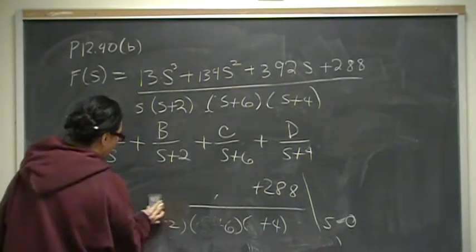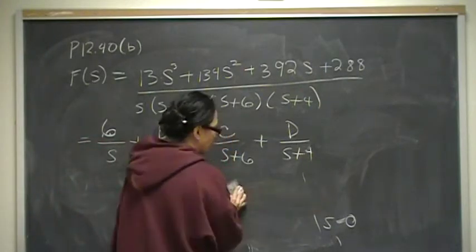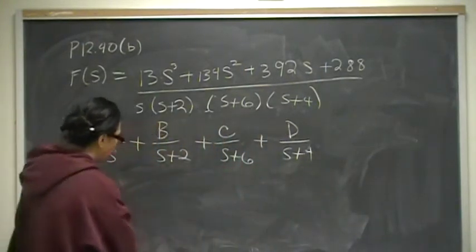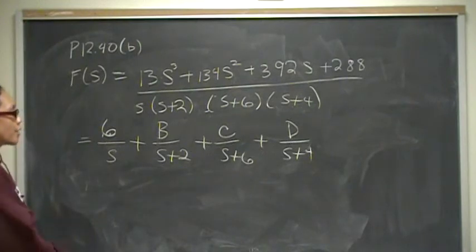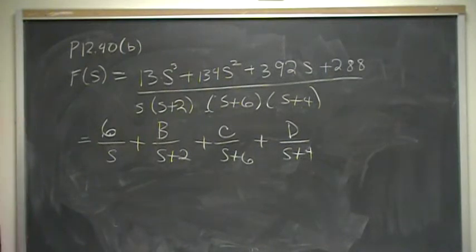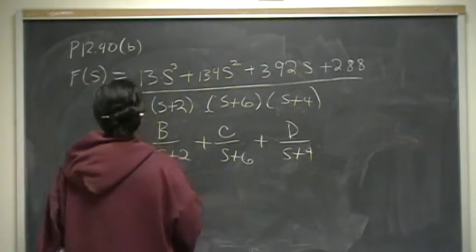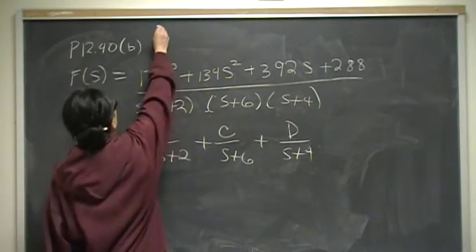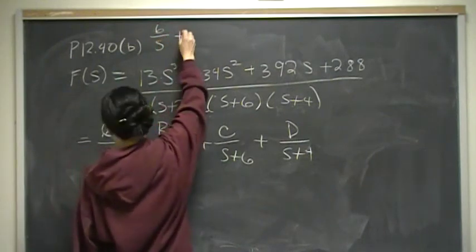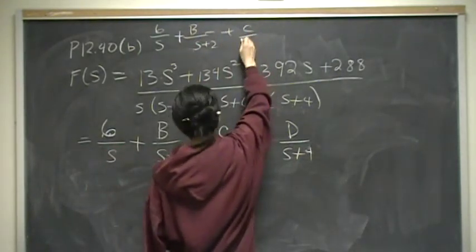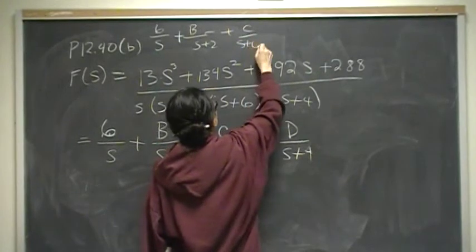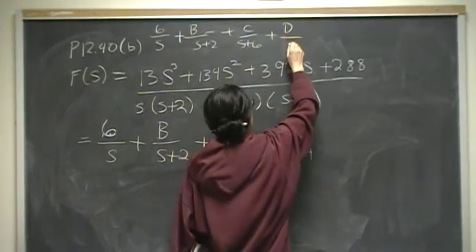Now let's find B the long way, and then C and D we'll do using the shortcut. I wanted to show the shortcut first — if you don't want to watch the rest or your teacher doesn't care about the longhand method, you already know it. So let's write: F(S) = 6/S + B/(S+2) + C/(S+6) + D/(S+4).